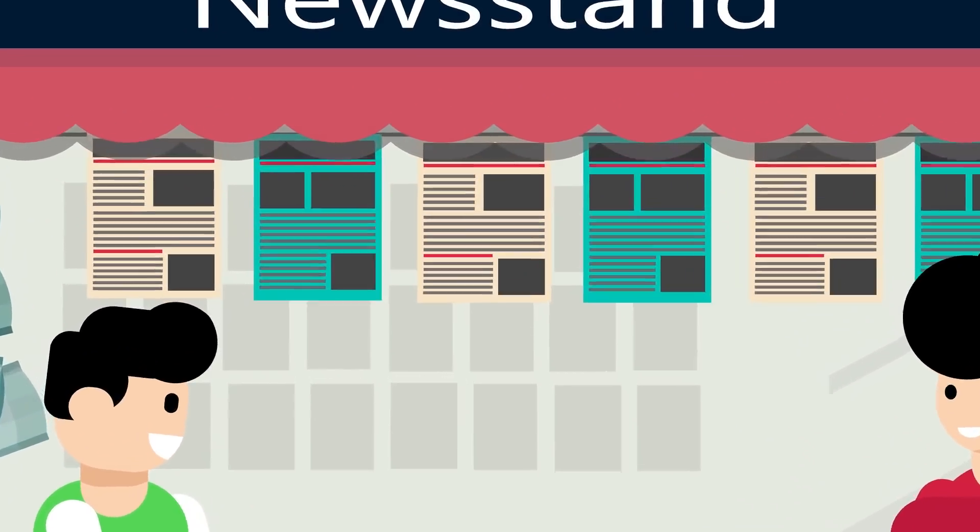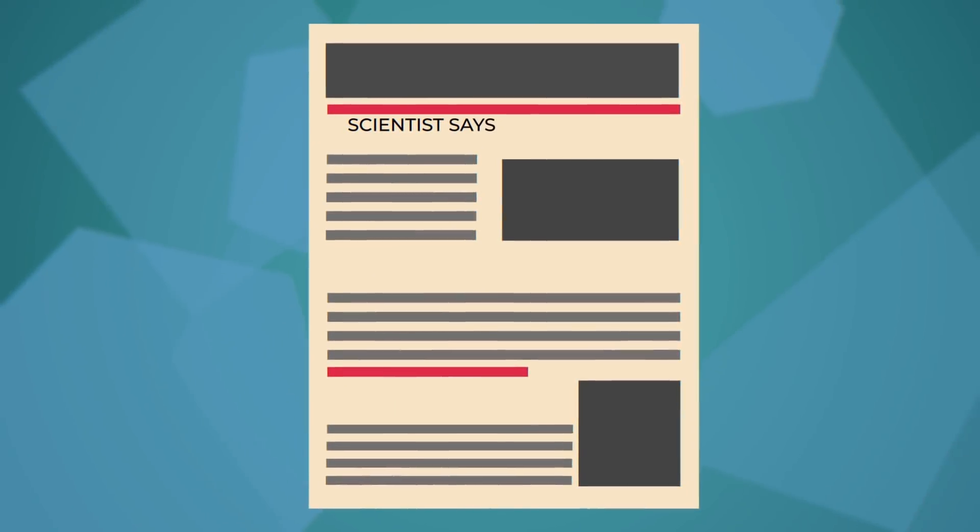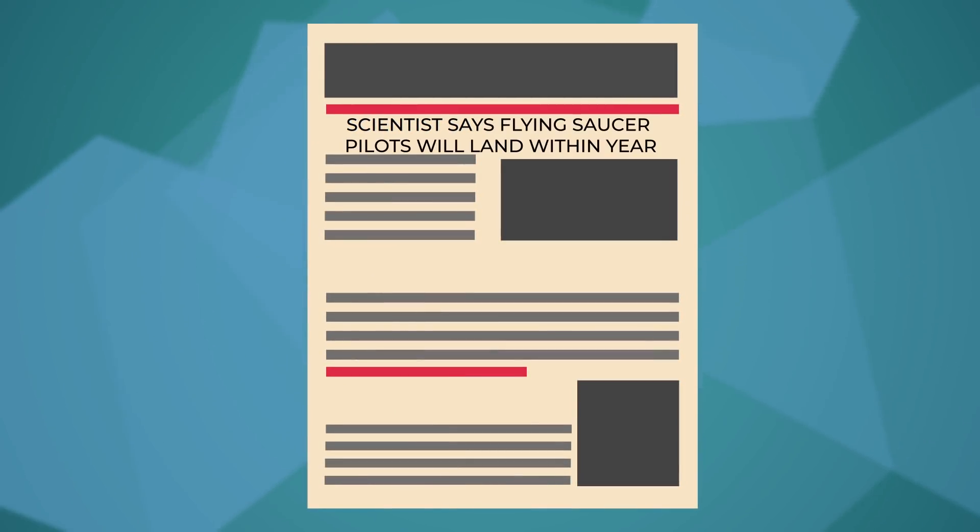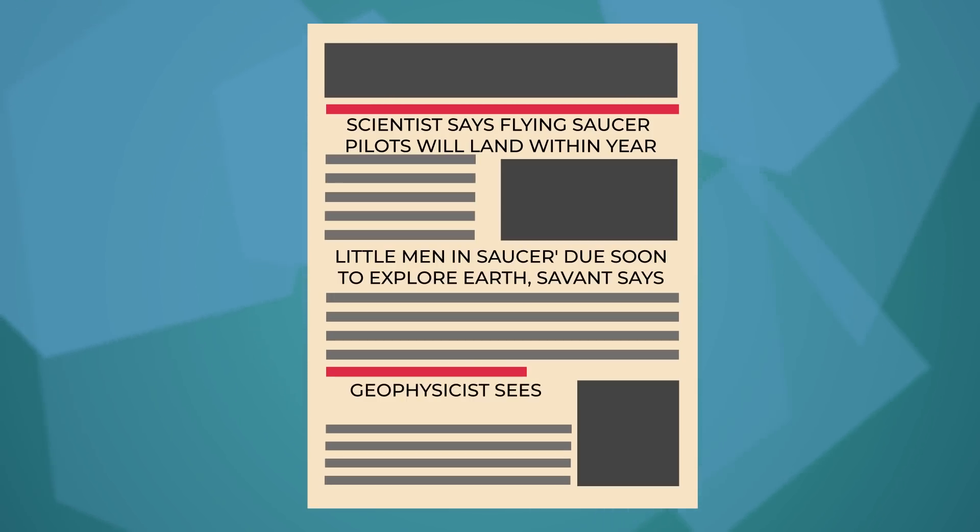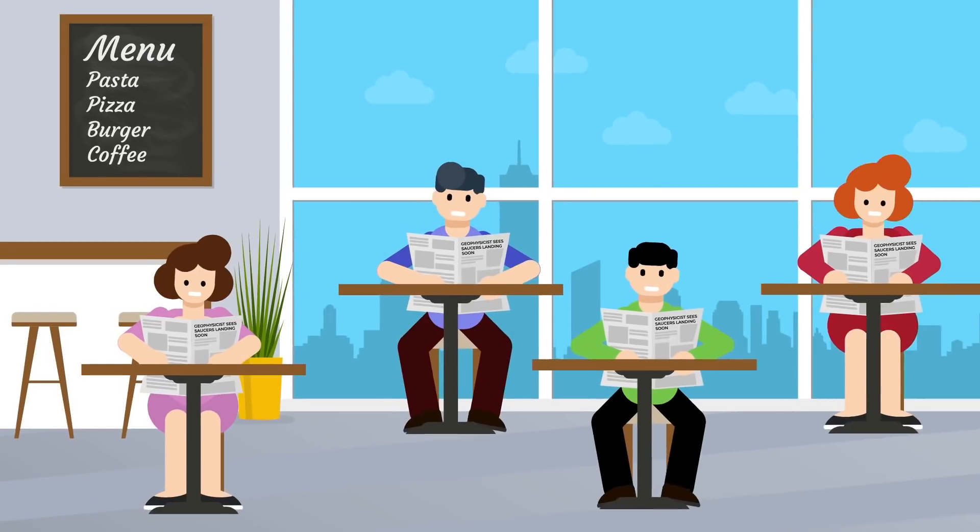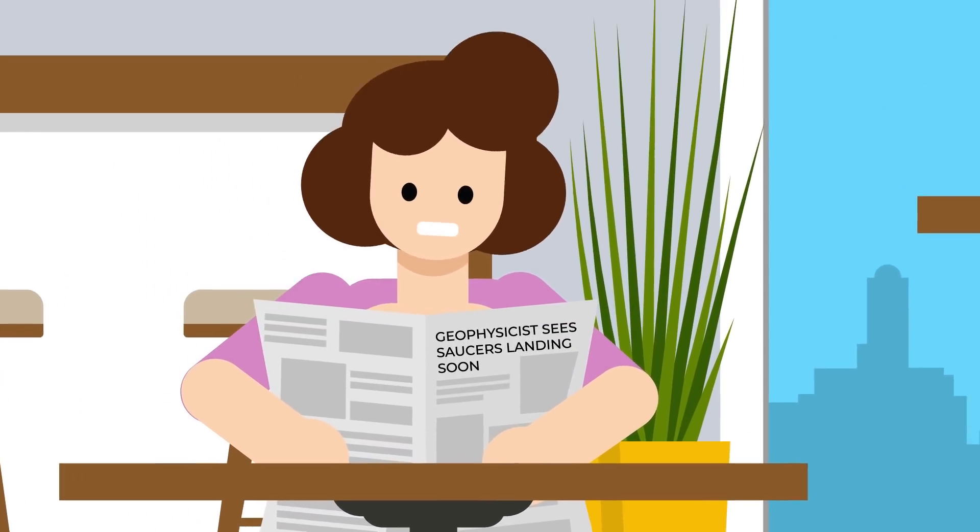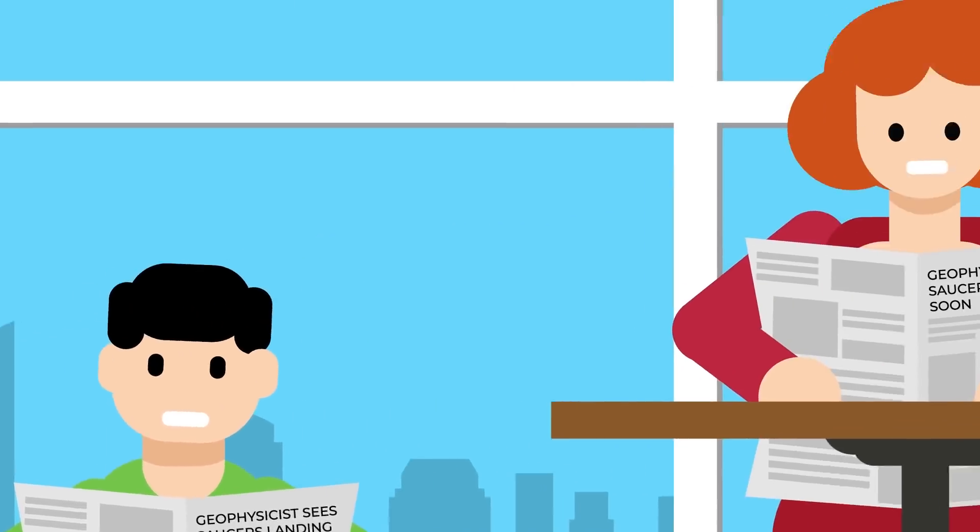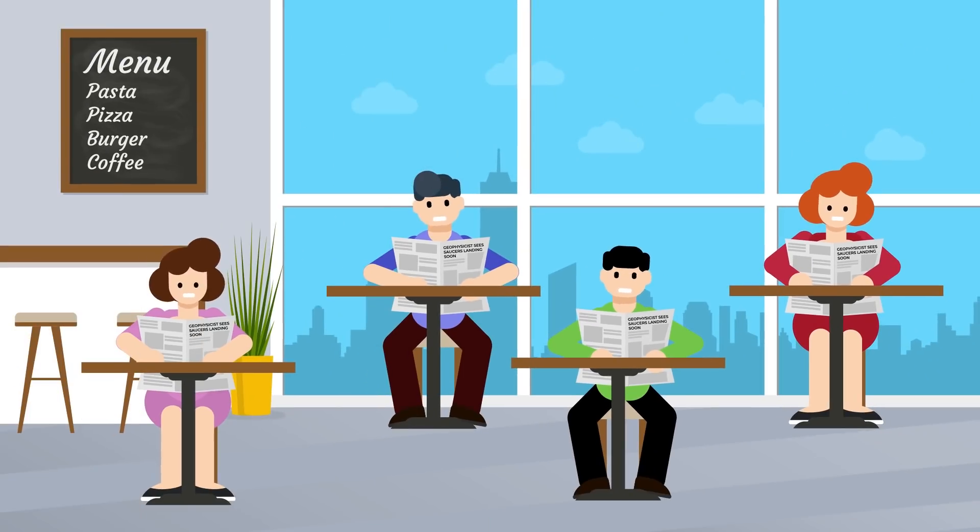Then a bombshell announcement hit newspapers all across the US. Scientists say flying saucer pilots will land within a year. Little men in saucer do soon to explore Earth, Savant says. Geophysicist sees saucers landing soon, thinks pilots from other planets about ready to visit Earth. The story spread like wildfire fueled along with the credibility of the man behind the claims, a professional scientist.